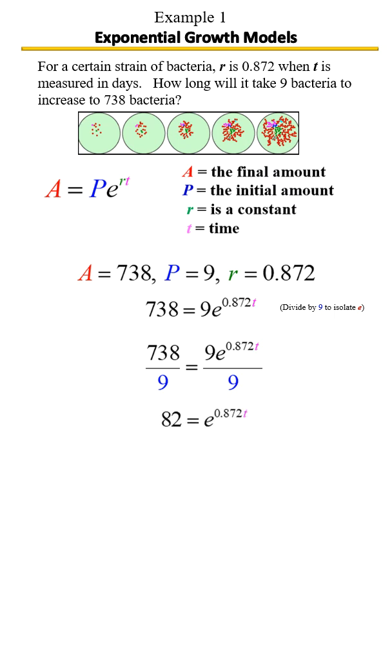Now that we've gotten rid of the 9, our next step is to get rid of the e. You can get rid of the e by taking the ln of each side. Let's go ahead and do that because ln e cancels.